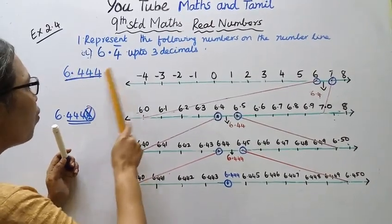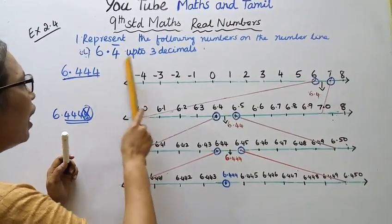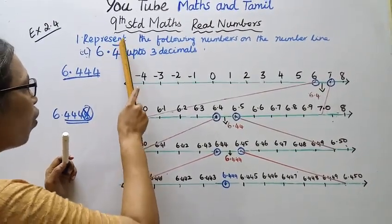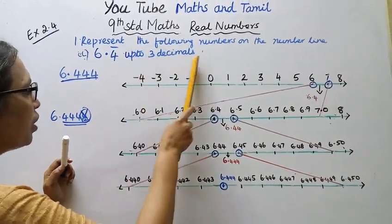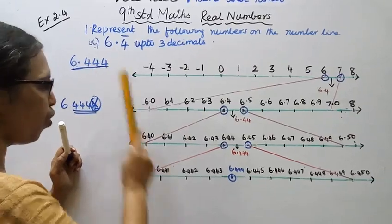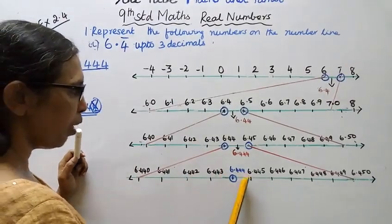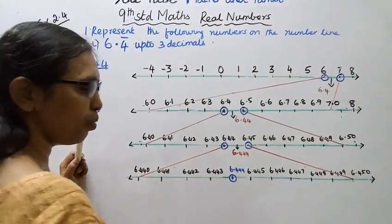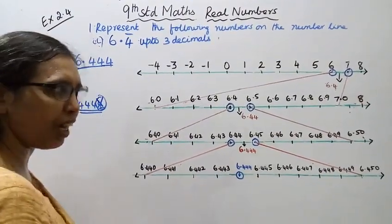So 6.444 bar, up to 3 decimals which is 6.444, is correctly located on the number line. Okay.